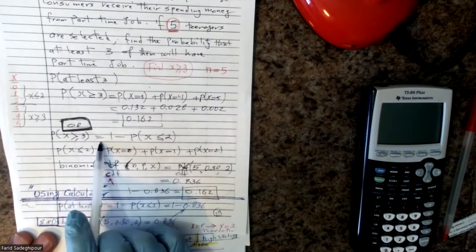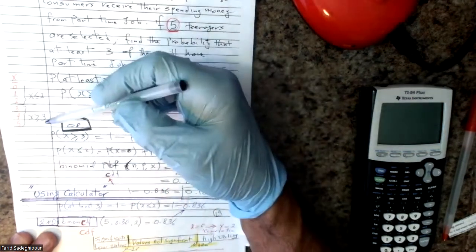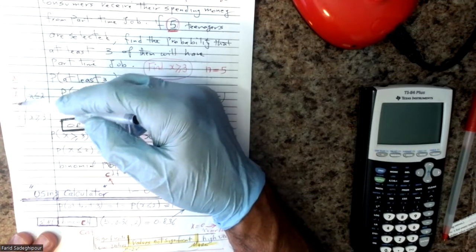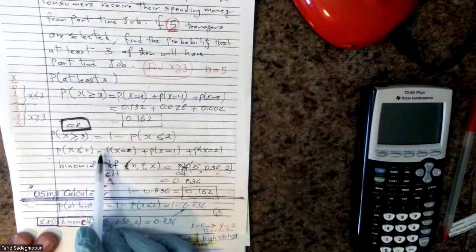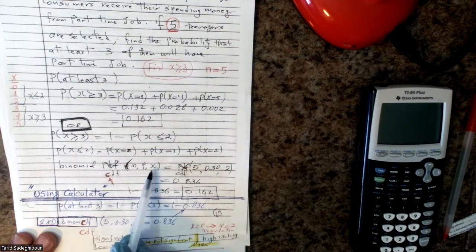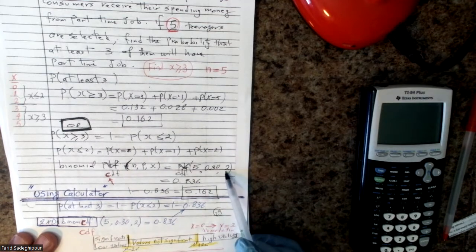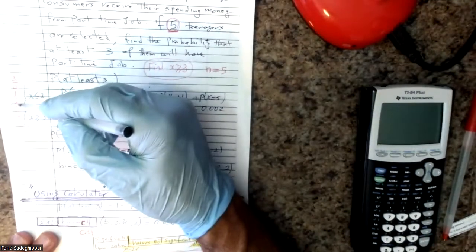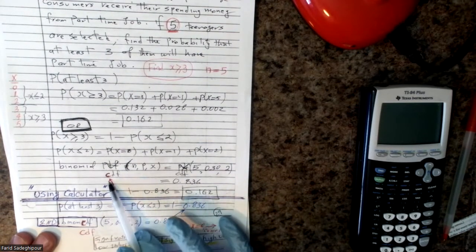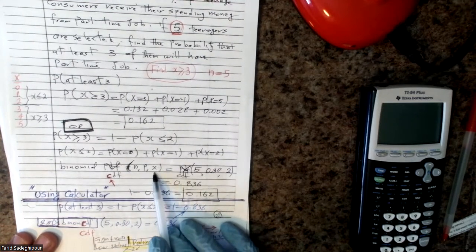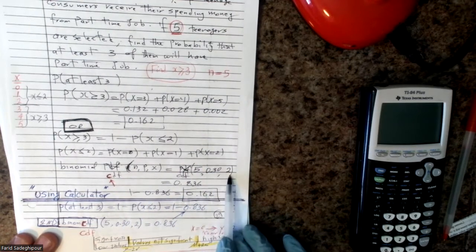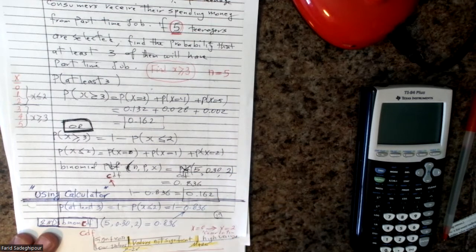To calculate the probability of x greater than or equal to 3 using the calculator, you can write it as 1 minus the probability of x less than or equal to 2. The CDF function accumulates probabilities from that number down to zero. So binomcdf(5, 0.3, 2) gives the sum of probabilities for x equals 0, 1, and 2. Subtract that from 1 to get your answer.